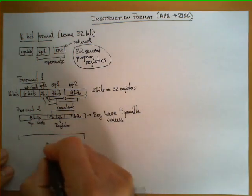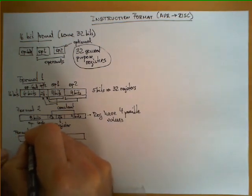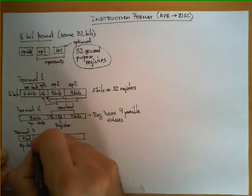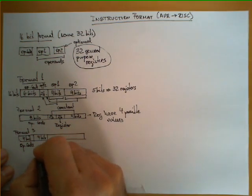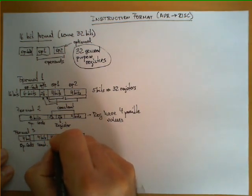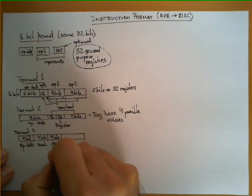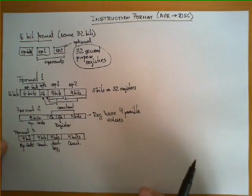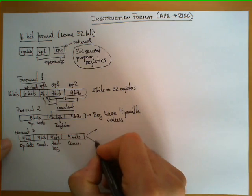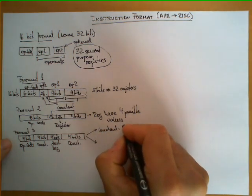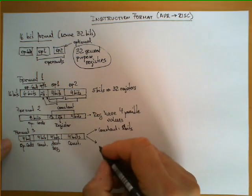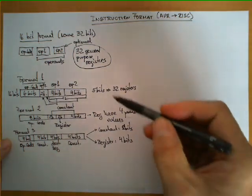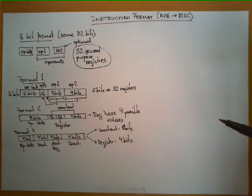A third format used by the microprocessor has four bits for the operation code, four bits for part of a constant, four bits for the destination register, and the remaining four bits also for the constant. The constant is represented with eight bits total, restricting the range of values. The register is encoded with only four bits, meaning we can only refer to 16 out of the 32 registers. Let's see examples of this encoding.